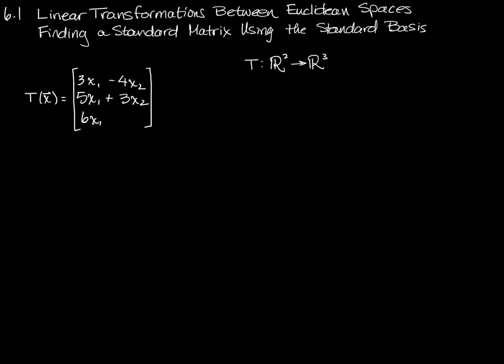But I can also tell that my domain is R2 because I have two variables. I'm doing different things with them in each of these rows. But there are only two variables. There's no x3 in any of this. So I can tell just by looking at a transformation what it goes from and to, which spaces it goes from and to.